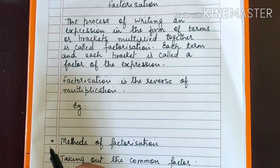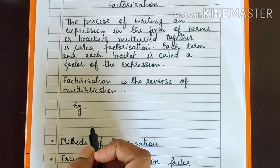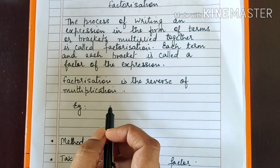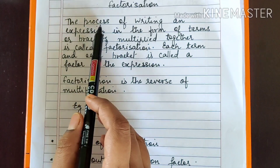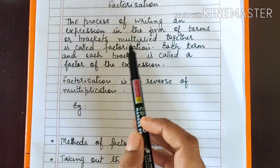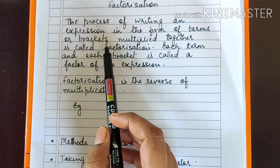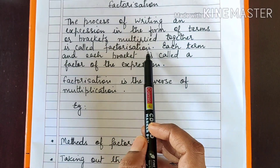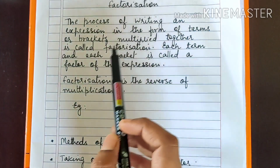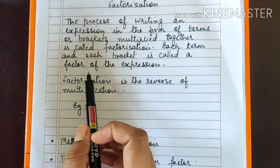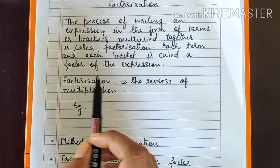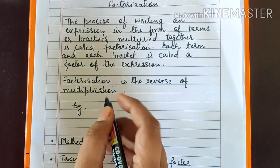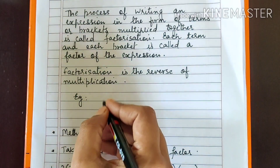You have already learned a few methods of factorization last year. I will help you to recall what is factorization. The process of writing an expression in the form of terms or brackets multiplied together is called factorization. Each term and each bracket is called a factor of the expression. Actually, factorization is a reverse of multiplication.